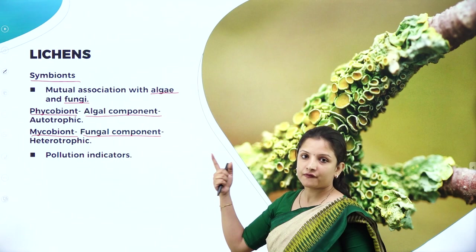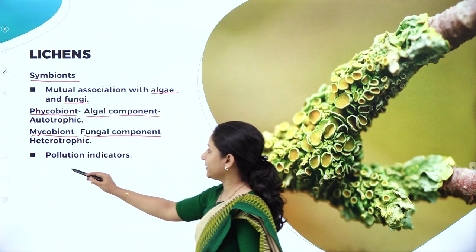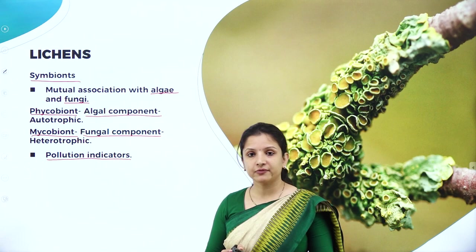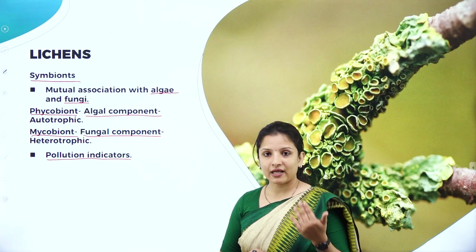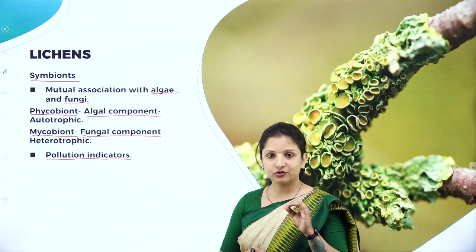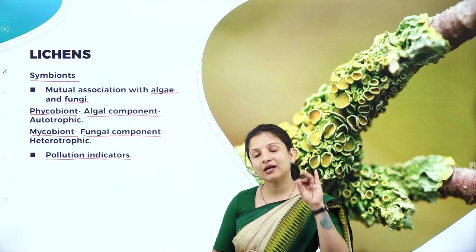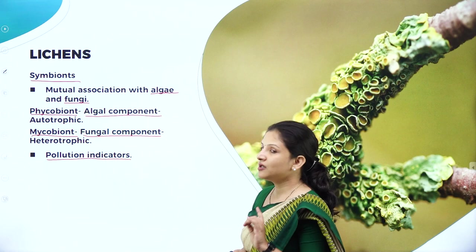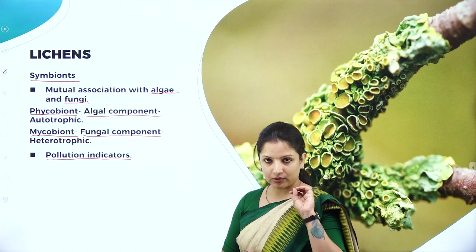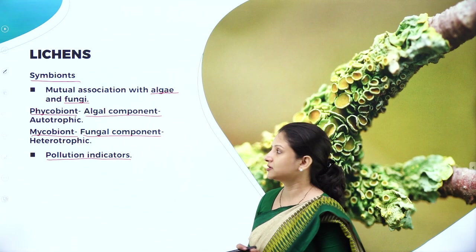Lichens are also good pollution indicators. Wherever there is heavy pollution, lichens will not grow. That is why in cities you hardly find lichens, but when you go towards villages or areas which are less polluted, you can find trees covered with lichen. Therefore, if you do not find lichens growing in a place, it is understood that that place is too much polluted — the air is too polluted. That is how scientists can easily find out whether an area is less polluted or heavily polluted, because lichens act as pollution indicators.